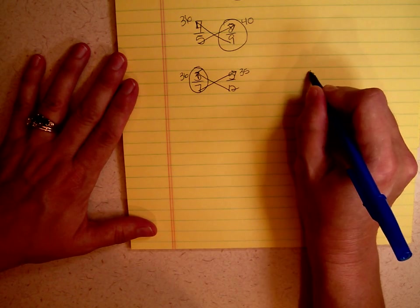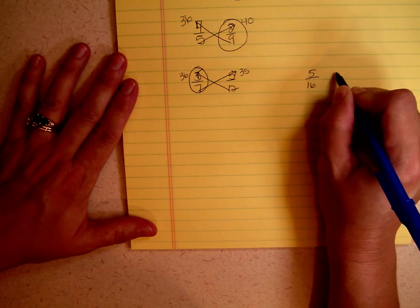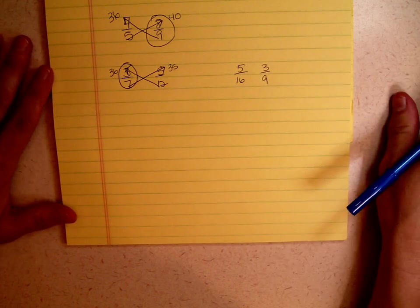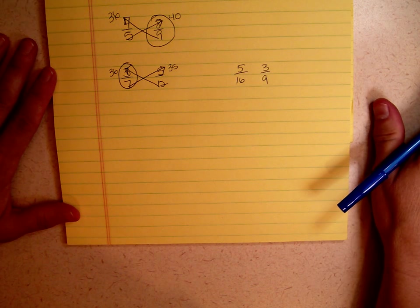Let's try one last practice problem: 5 sixteenths and 3 ninths. Which one of those two is bigger? Which fraction is larger?